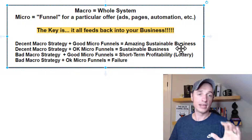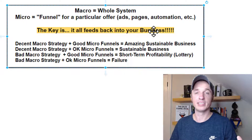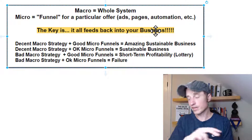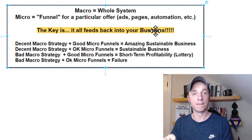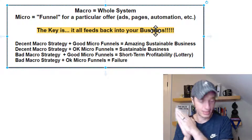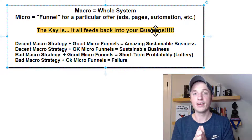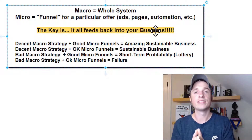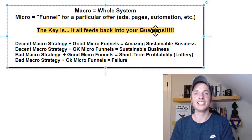If you're in this failure mode where most everything seems to be failing, it's more than likely because you're creating okay micro funnels but have no backup macro strategy to convert people later on down the road. Think about the macro strategy, think about your business as a whole, get from a bad macro strategy to a decent one with your okay micro funnels — and then you've got a sustainable business. That's it for this video, I hope you have a great rest of the day.